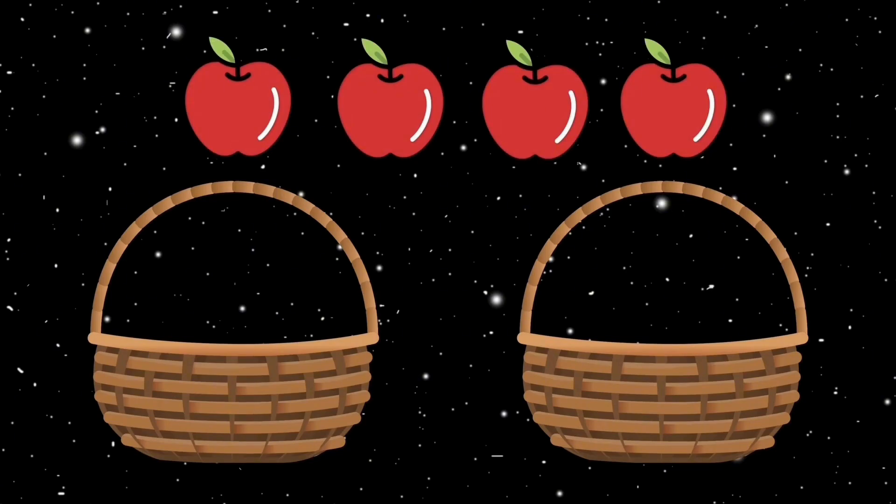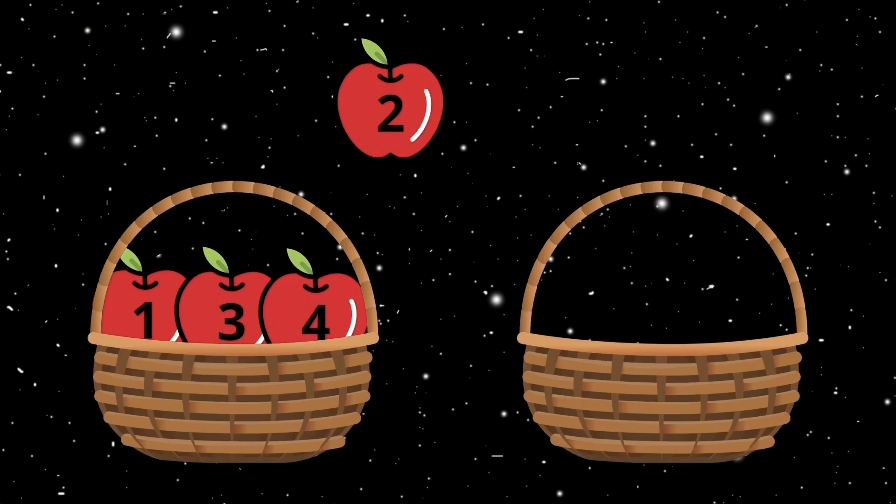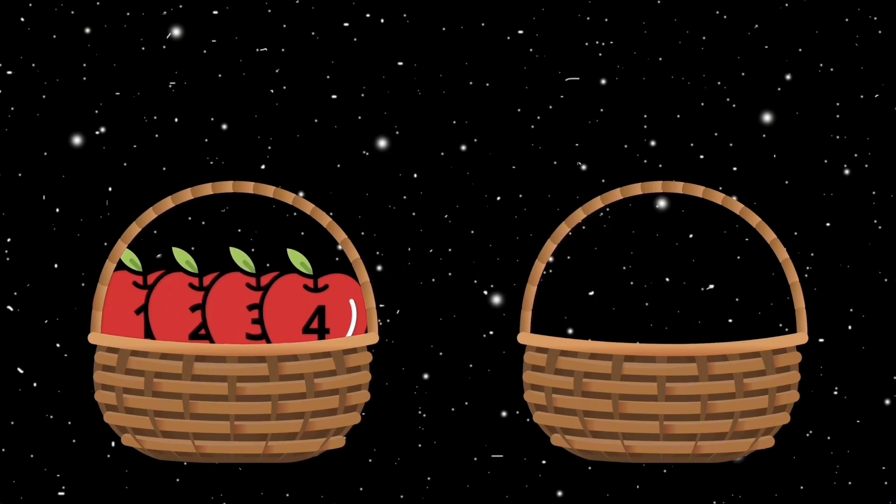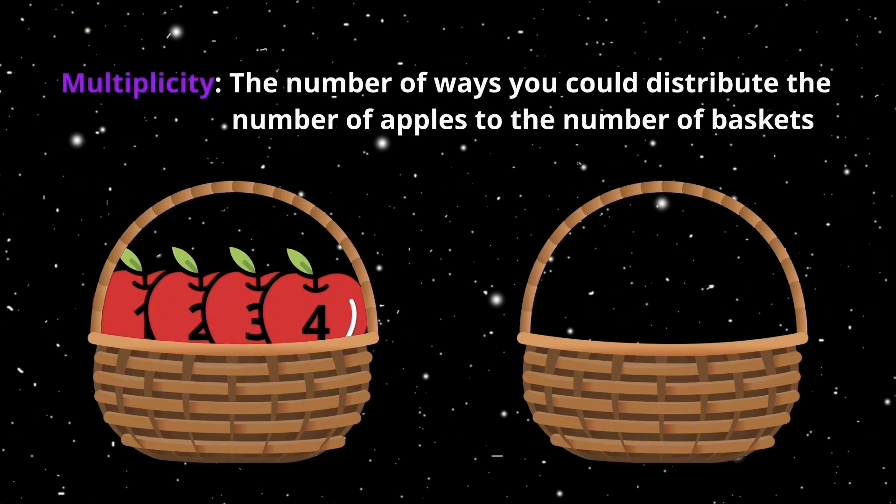And the apples are labeled 1, 2, 3, and 4. You can place three apples in one basket, say 1, 3, and 4, order doesn't matter, and one apple in the other. Or, you can place all four apples in one basket, and no apples in the other. However, the arrangement that yields the highest multiplicity, as in the number of ways you could distribute the apples amongst the baskets, is if you place two apples in one basket and two in the other.